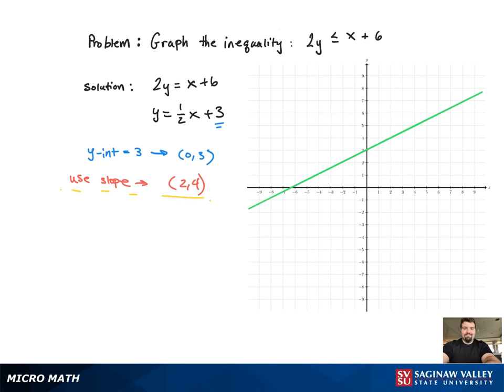Since it's less than or equal to, we're going to keep it as a solid line. Now we just need to shade a region, so we're going to use a test point arbitrarily using 1, 1. And when I plug that into the inequality, we're going to see if we get a true statement or not. When I plug it in, I get 2 less than or equal to 7, which is true.